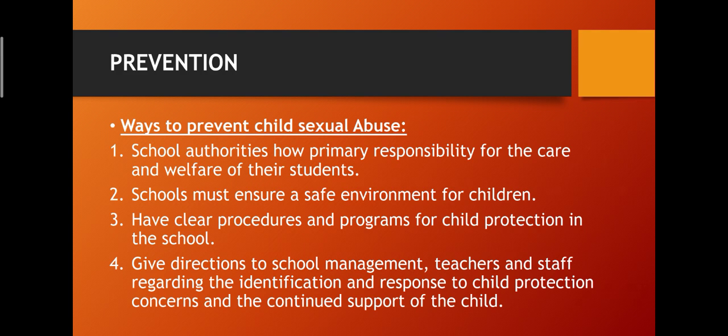Ways to prevent child sexual abuse in schools: school authorities have primary responsibility for the care and welfare of their students. Schools must ensure a safe environment for children. Have clear procedures and programs for child protection in the school, and give directions to school management, teachers, and staff regarding the identification and response to child protection concerns and the continued support of the child.